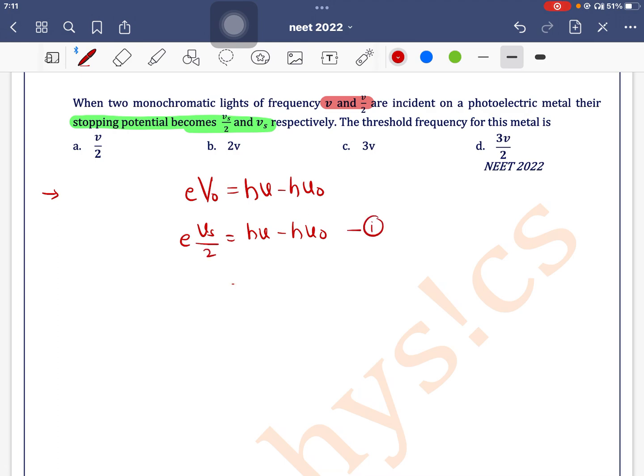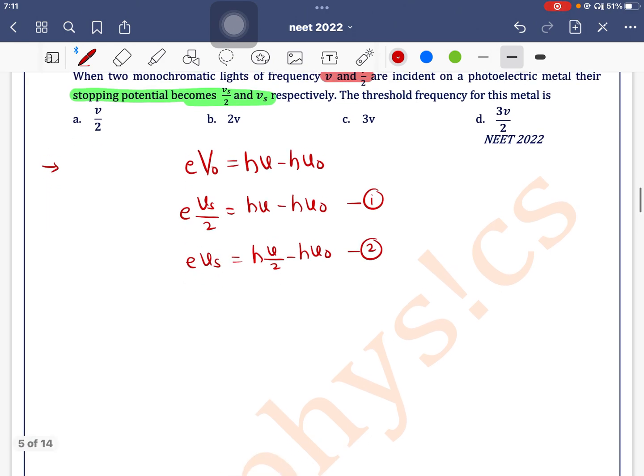In the second case, when frequency of incident light is nu by 2, stopping potential is Vs - equation number 2. It is asked to find the threshold frequency.